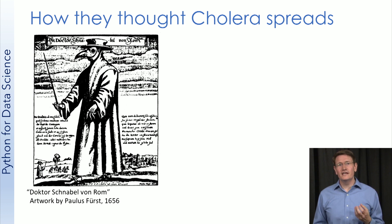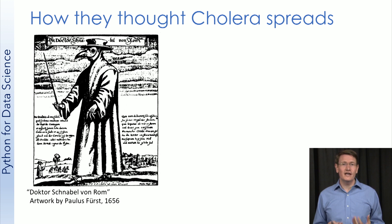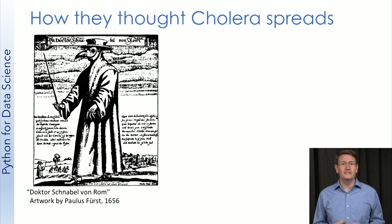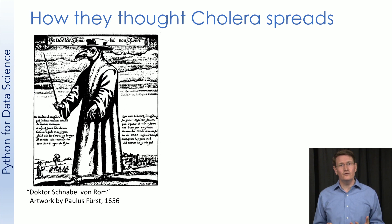So now that you have a decent idea of what they thought caused the disease, that leads us to John Snow, a scientist living in London in the 19th century. His background was as an anesthesiologist, where he had applied scientific principles to make the practice far safer for patients. He had also published his theory that cholera was waterborne in 1849, but his theory gained little traction.